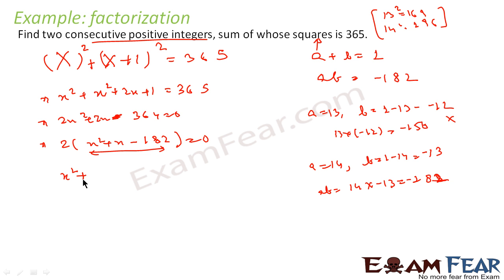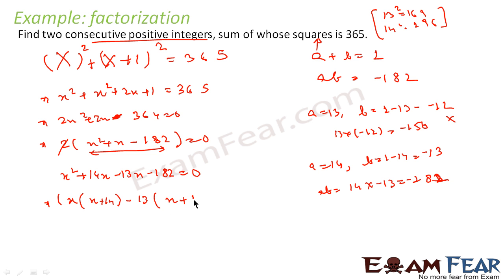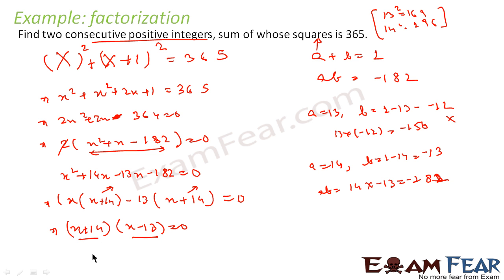So I will write: x squared plus 14x minus 13x minus 182 equals 0 (the factor of 2 cancels since everything equals 0). Taking x common: x(x plus 14); taking minus 13 common: minus 13(x plus 14). This gives (x plus 14)(x minus 13) equals 0, so either x equals minus 14 or x equals 13.